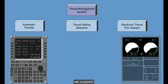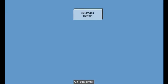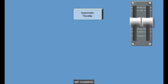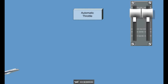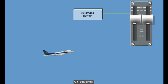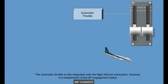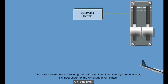The Automatic Throttle System automatically positions the throttle levers to control the airplane's thrust throughout the flight regime. The Automatic Throttle is fully integrated with the Flight Director subsystem. However, it is independent of the Autopilot engagement status.